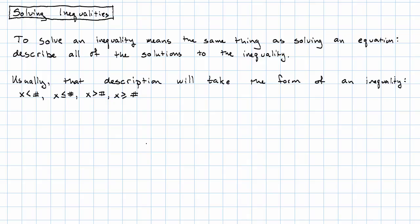Like equations, occasionally when we solve inequalities, we'll be left with an inequality with no variable in it. If that inequality is true, then every number is a solution. Whereas if that inequality is false, there's no solution.